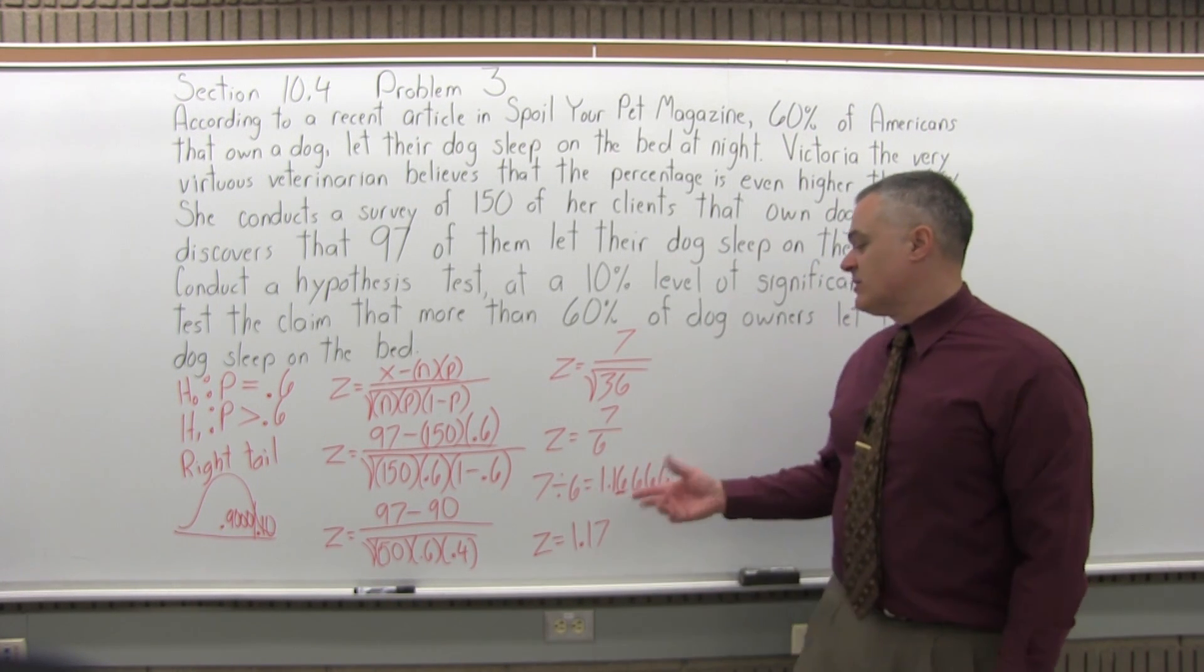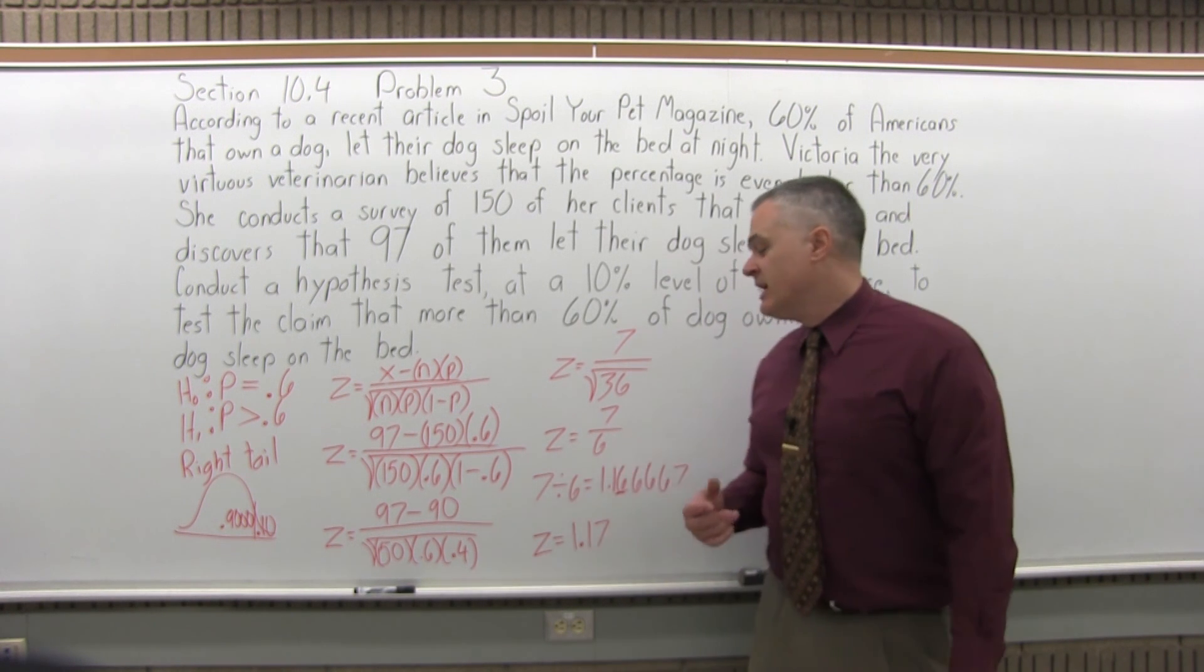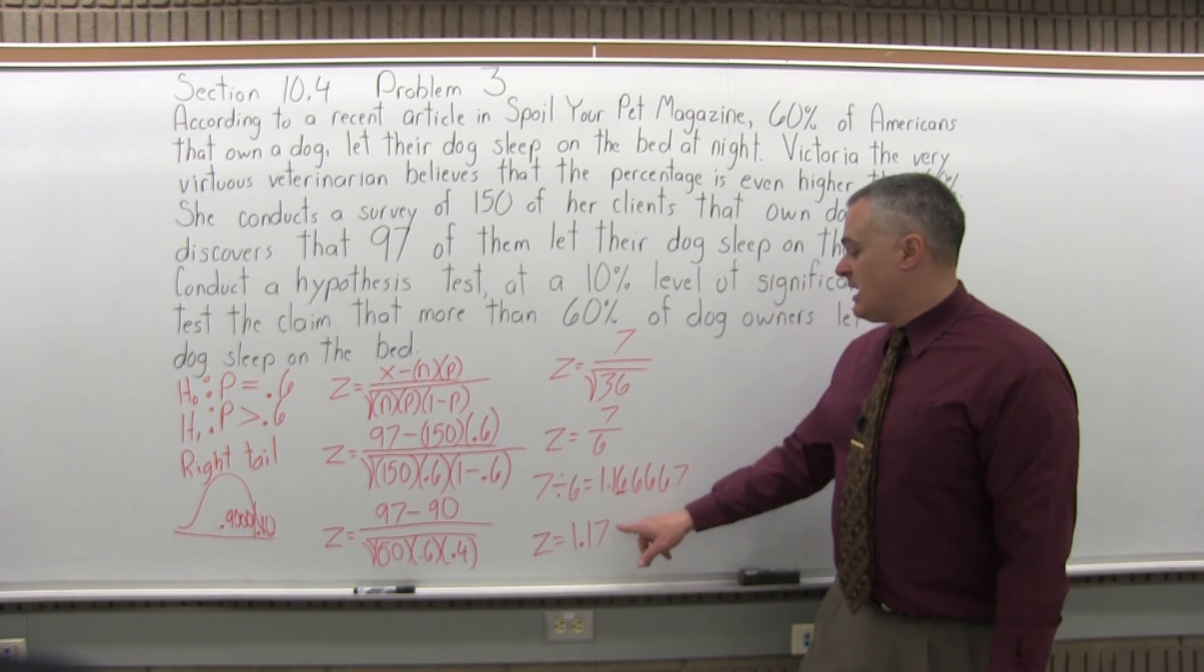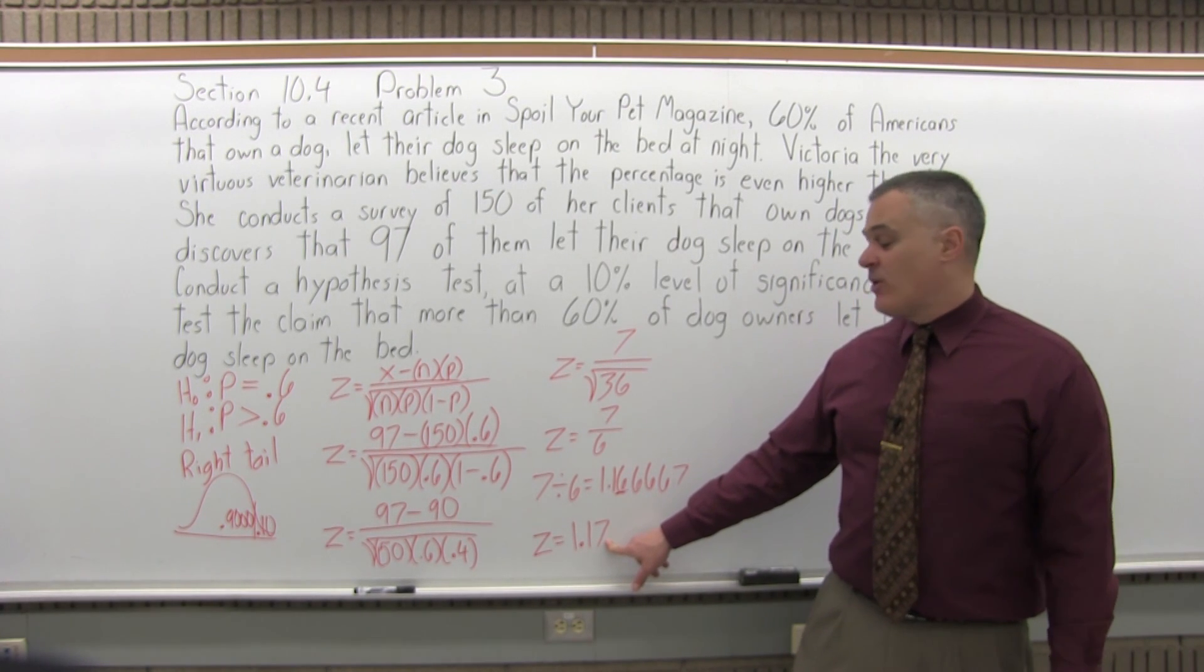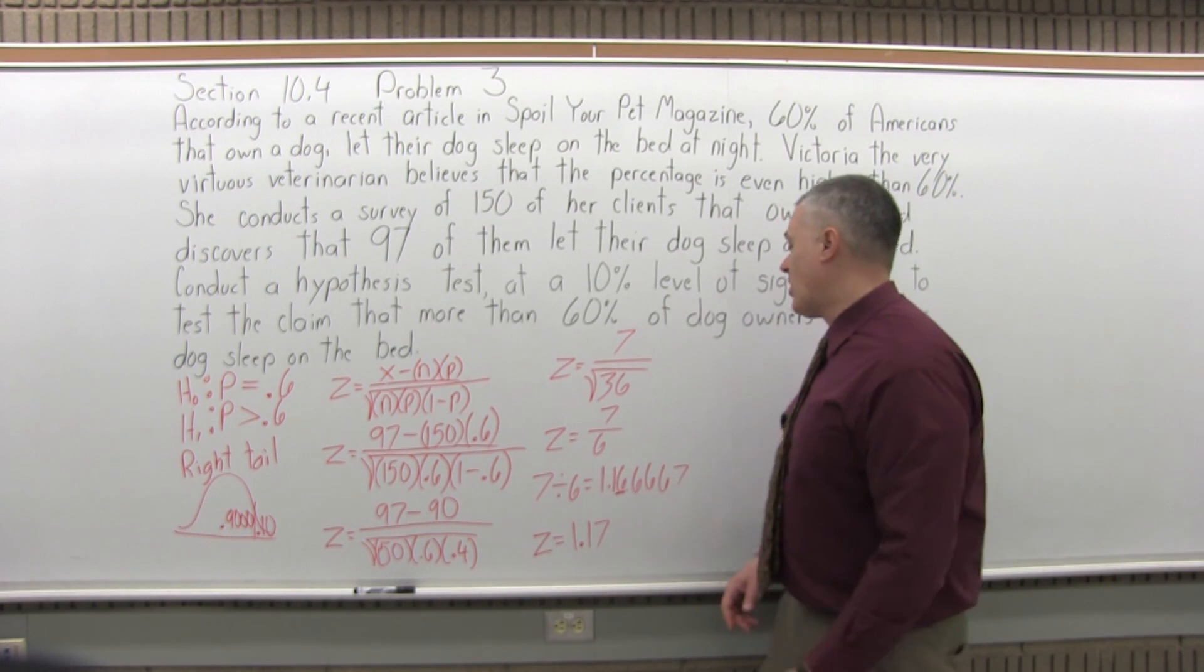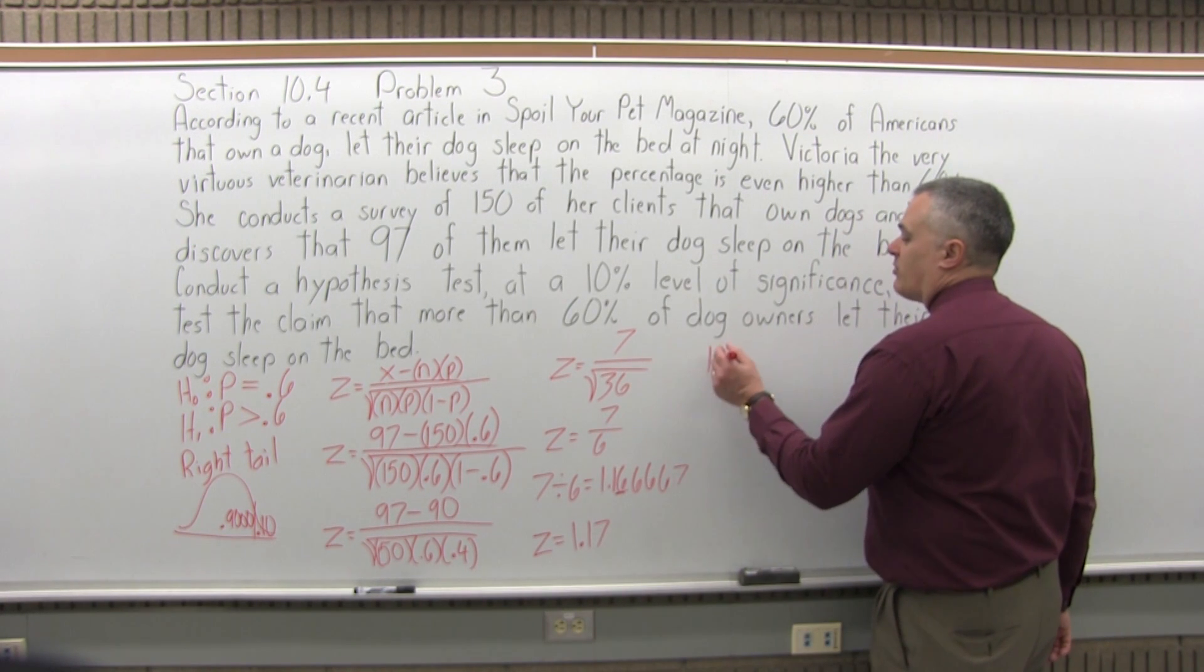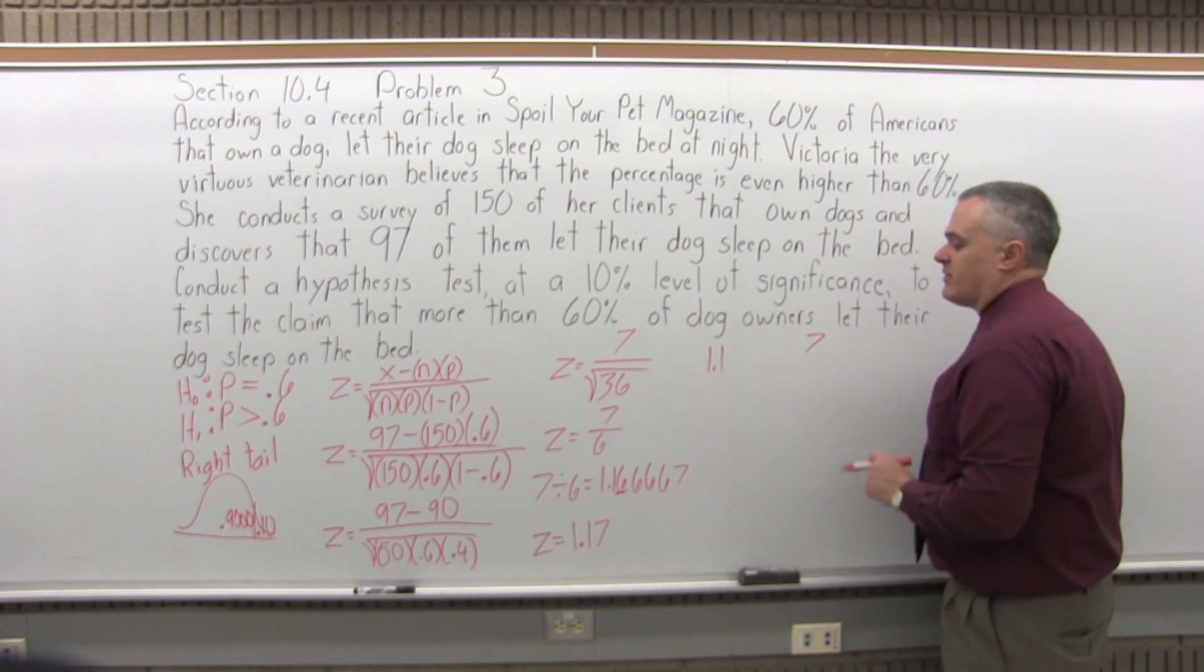The first part of the process to look up something in the chart is to write it so that it has two places after the decimal. In this case, we had too many places, so we rounded it off and it rounds off to 1.17. Now, split that number into two parts by pulling off the rightmost digit. That 7 will come off. I'll have 1.1 from the left part and 7 when I take off the rightmost digit.